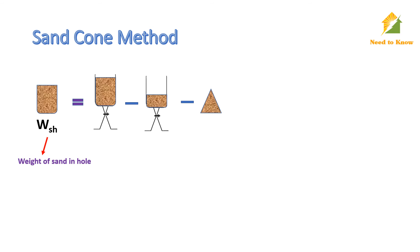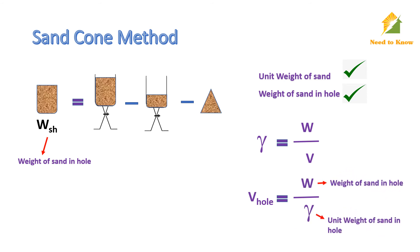Now we have unit weight of the sand and weight of the sand in the hole. As unit weight is the weight per unit volume, by rearranging we can determine volume of hole by dividing the weight of sand in the hole over the unit weight of that sand. And now we have the volume of the excavated hole and weight of excavated soil.